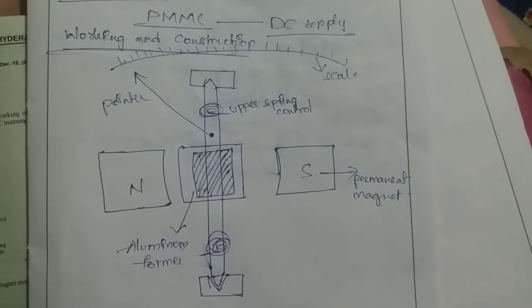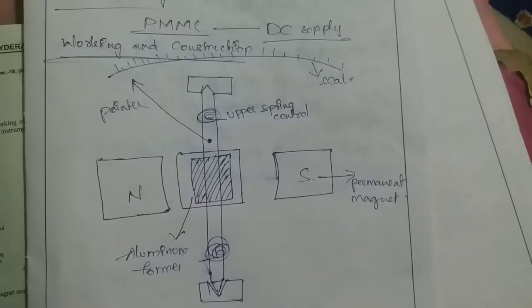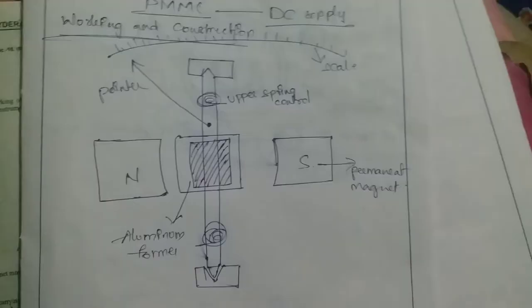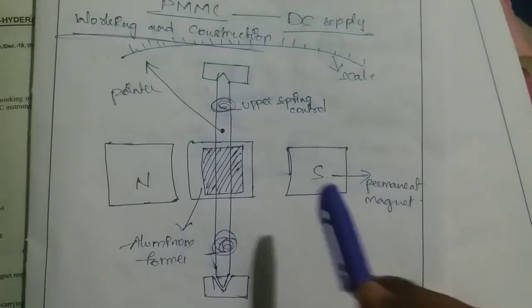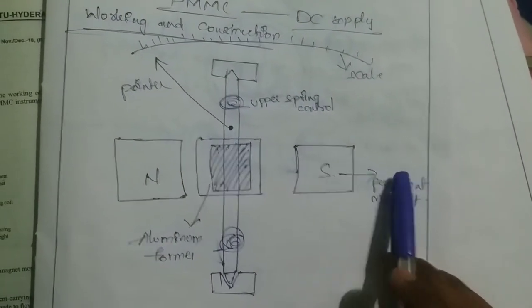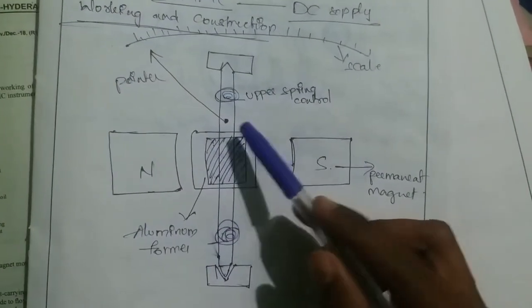Hi friends, welcome to Victem Box. Today we are discussing the construction and working of the PMMC instrument. The construction of the PMMC instrument has two magnets, an aluminum former, and the spindle is attached.